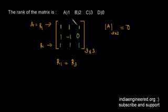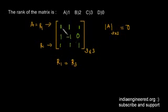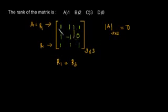Now we have to look whether we can find any non-zero sub-matrix of order two by two. If we can do that then the rank is obviously two. Here we have one into minus one, that is minus one, which is non-zero. So we have a non-zero determinant for this two by two sub-matrix, and therefore the rank is two.